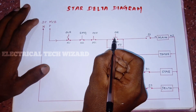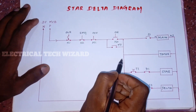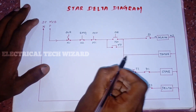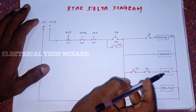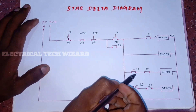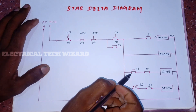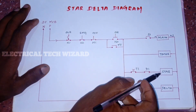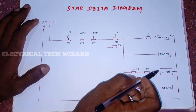On the on button, we will connect the output supply. The timer will be NC. Delta will be NC. The star contactor will connect the A1 coil panel. A2 panel will connect the neutral panel.